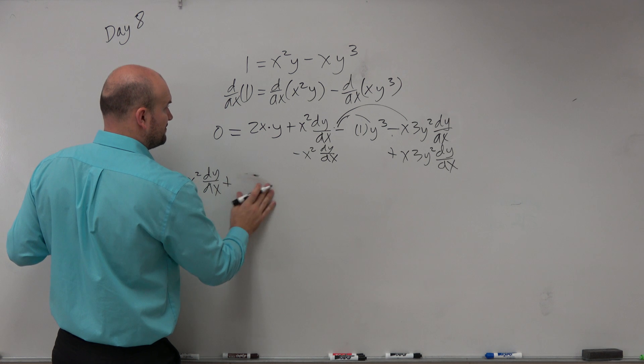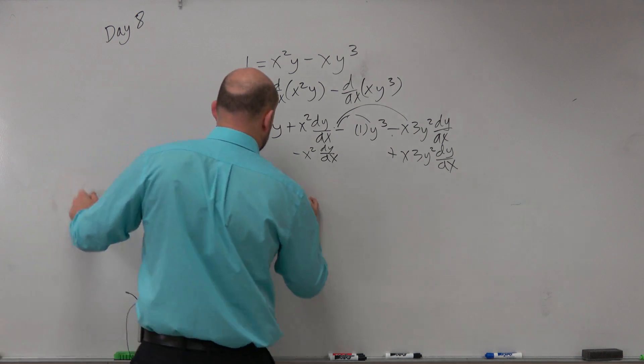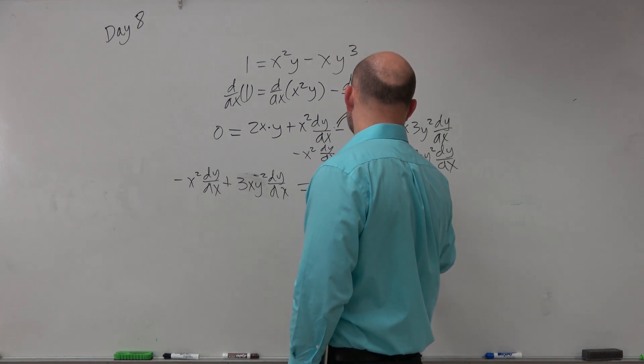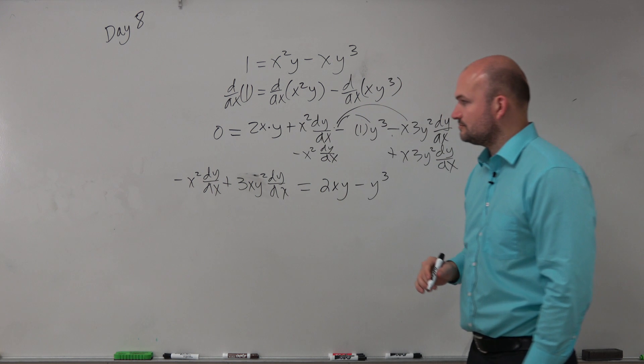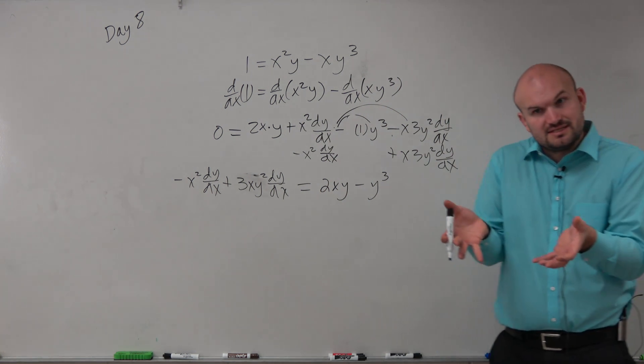Well, let's just write the 3 in front. 3xy² dy/dx equals, now what's left over? I have 2xy minus y³. So I got the dy/dx's on the same side,